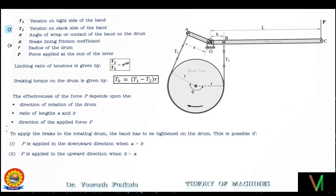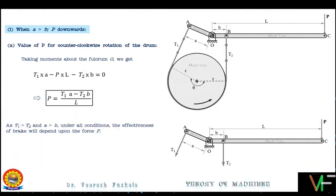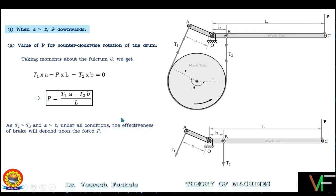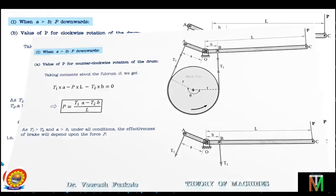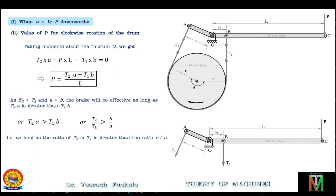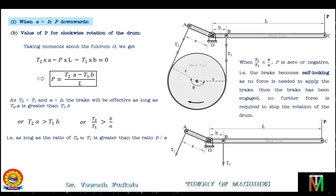We further discussed the first configuration of the differential band brake in which distance a is greater than b and the force is applied in the downward direction on the lever. We derived the equation of force P for both counterclockwise and clockwise rotation, and learned about the condition of self-locking in clockwise rotation: if a is greater than b, force is applied downward, drum rotates clockwise, and t2/t1 ≤ a/b, then the brake will be self-locking.